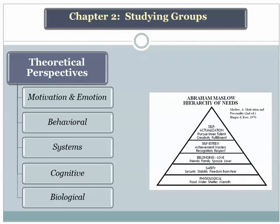Motivational and emotional systems is the first overall category of theoretical outlooks. What motivates people? What moves people to pursue goals, to join in groups, to seek leadership positions in groups? The theories that speak to motivational and emotional issues can be categorized together — after all, they both come from the same root word meaning to move. Emotions move us; motivation moves us towards goals. There are many classic theories that stress motivation.